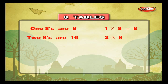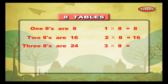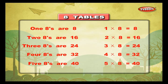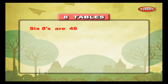1 eight is 8, 1 into 8 is equal to 8. 2 eights are 16. 3 eights are 24, 2 into 8 is equal to 24. 4 eights are 32, 4 into 8 is equal to 32. 5 eights are 40, 5 into 8 is equal to 40.